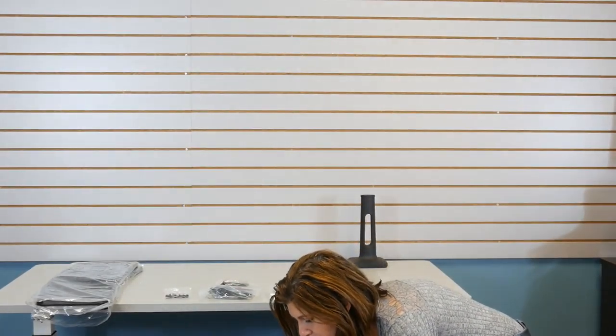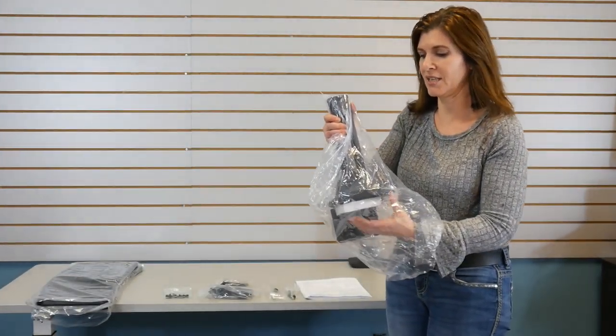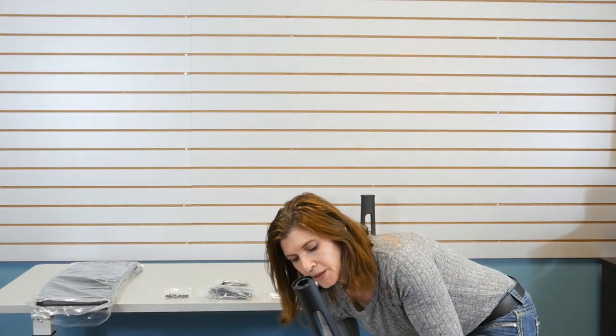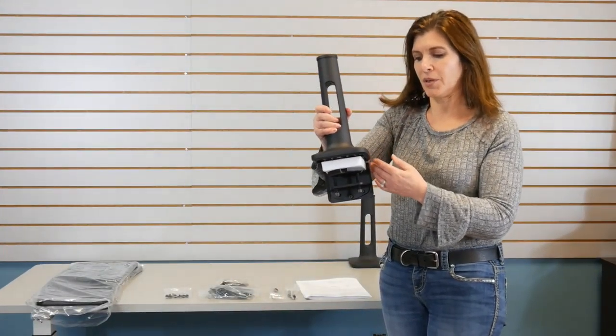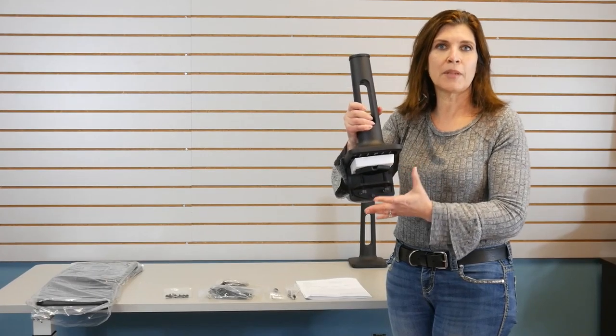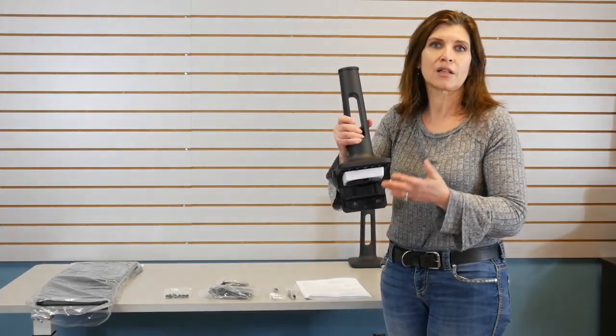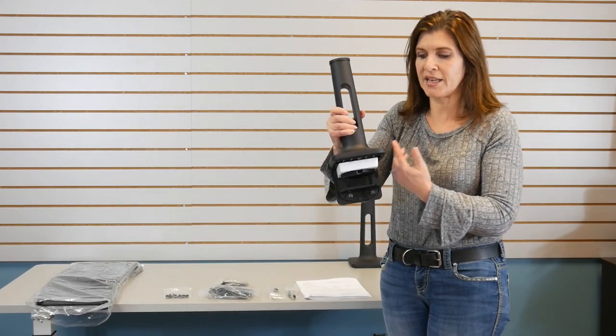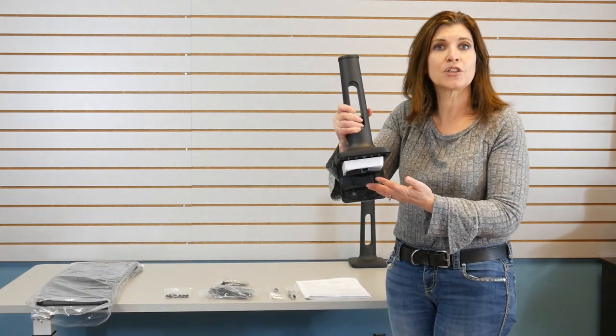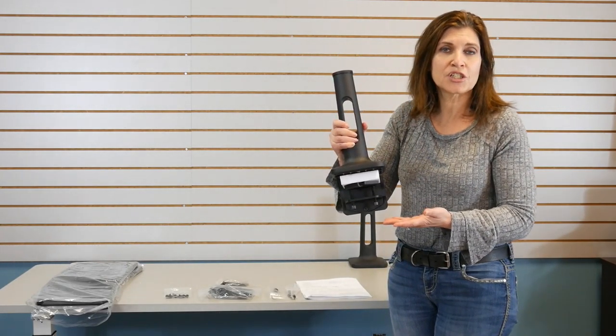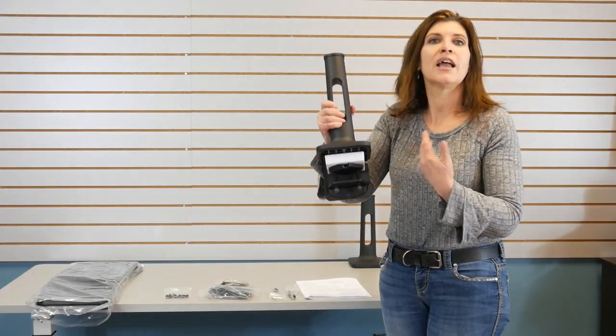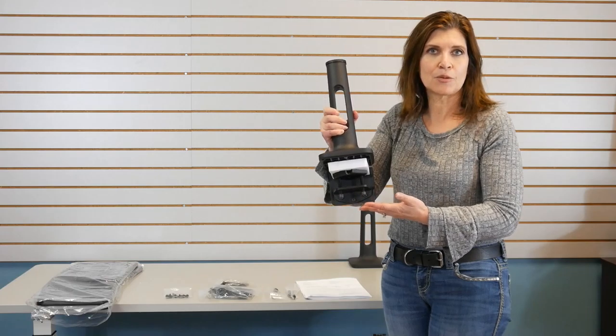Let's start with our first component which is the base. On the Comfort Plus it's going to ship as if you are going to mount it using the clamp mounting method. It's meant for desks, or it's already pre-configured rather, for a three-quarter inch desk but if your desk is thicker all you have to do is just loosen it and keep it to the appropriate height.